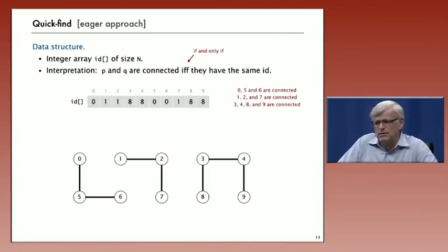For example, in this example with our 10 objects, the ID array that describes the situation after seven connections is illustrated in the middle of the slide. At this point, 0, 5, and 6 are all in the same connected component because they have the same array entry 0. 1, 2, and 7 all have entry 1, and 3, 4, 8, and 9 all have entry 8. That representation shows that they're connected.